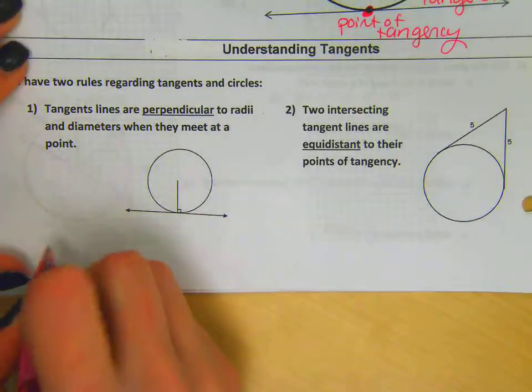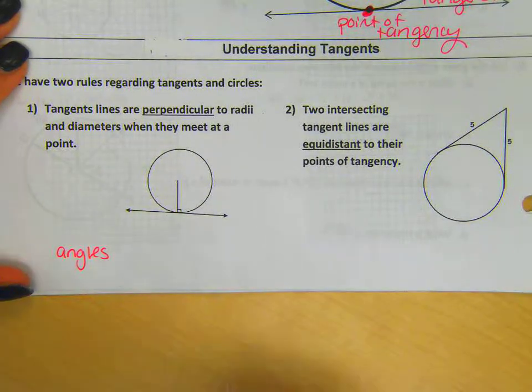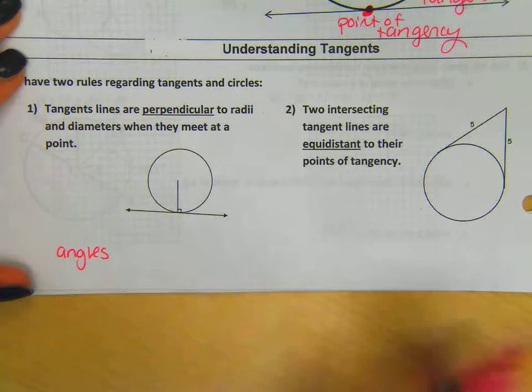One rule, the first one, deals with angles. So whenever we have an example problem that has angles, most likely we're going to be able to use rule number one.